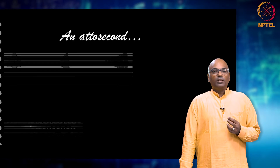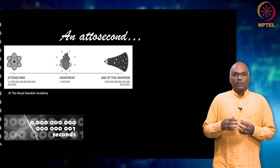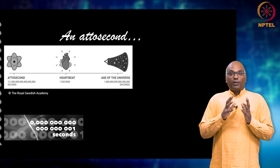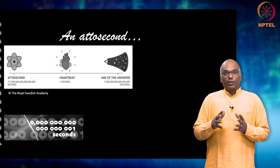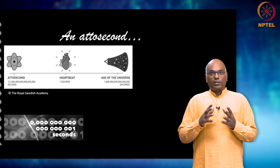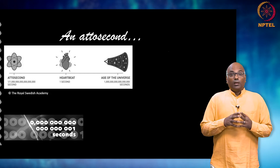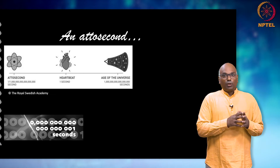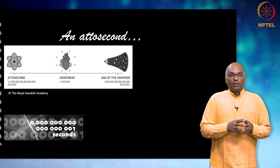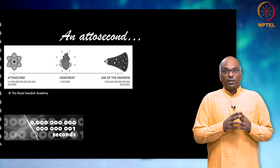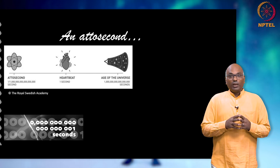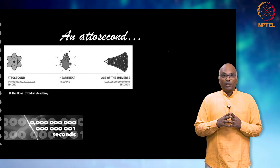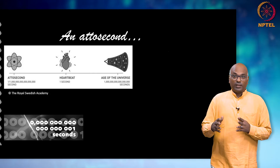To get a feel for it, consider the beat of the human heart, which is about 1 beat per second. Now, if we compare that to the age of the universe in seconds, which is 10 to the 18 seconds, then an attosecond is such a short duration of time that 1 heartbeat measured in attoseconds contains 10 to the 18 attoseconds — which is 1 followed by the same number of zeros as the age of the universe in seconds.